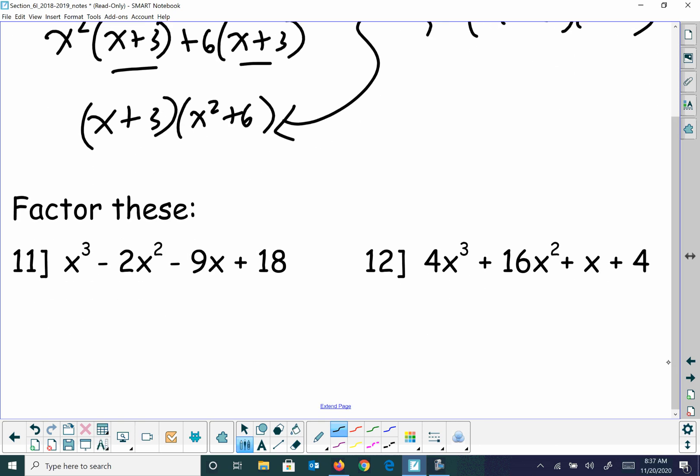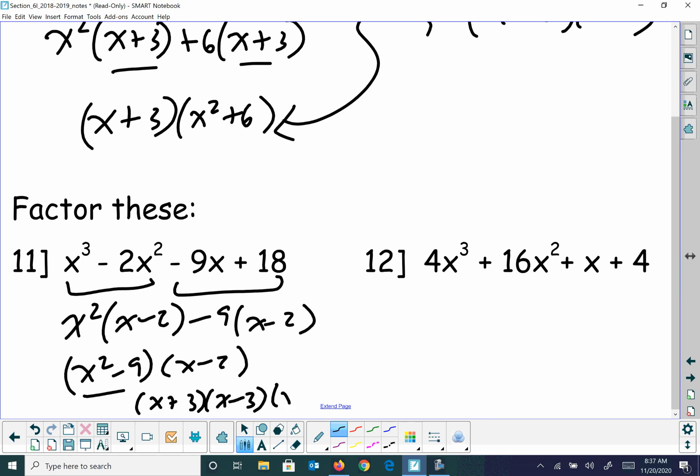So when you have 4 terms, sometimes you look at it and say, okay, can I do it as grouping? Can I factor an x squared out? And that leaves me x minus 2. Can I factor a negative 9 out? And that gives me x minus 2. That leaves me x squared minus 9 and x minus 2. Double check. Do I have a difference between squares? Yeah, I do. That'll factor to x plus 3 and x minus 3. And then I still have the x minus 2 with it.